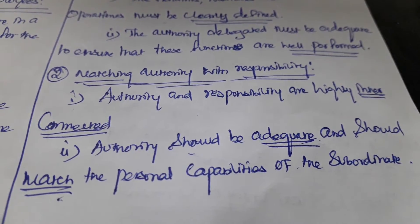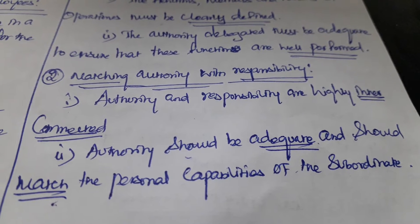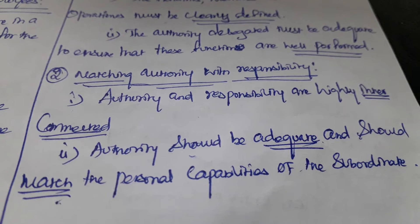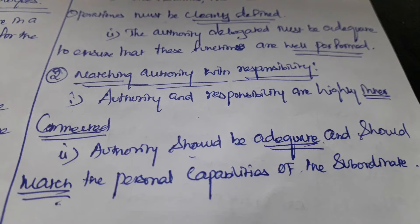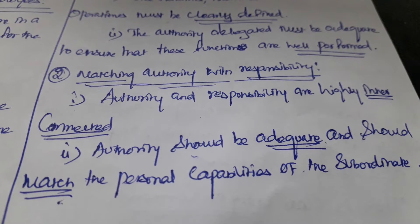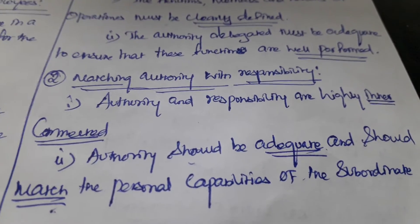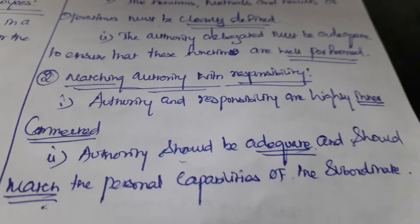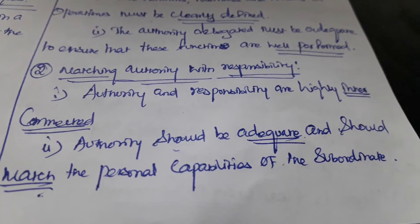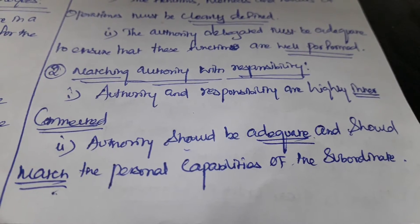Matching authority with responsibility. Authority and responsibility are highly interconnected — they go together. Authority flows from top level to bottom level; responsibility flows from bottom to top level. Both are highly interconnected. Authority should be adequate to match the personal capabilities of the subordinate.